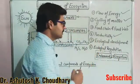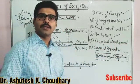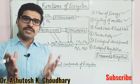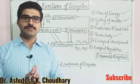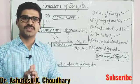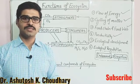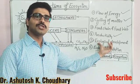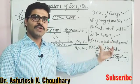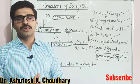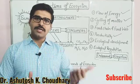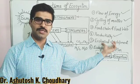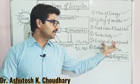The next function is ecological development. Ecological development means that the ecosystem is not stable — there is always advancement and changes in the species, type of species, and structure of the ecosystem. So we can say that ecological development, or ecological succession, is taking place. Ecological succession is a separate topic; a detailed lecture is available on the YouTube channel.